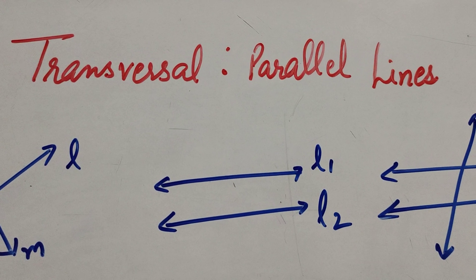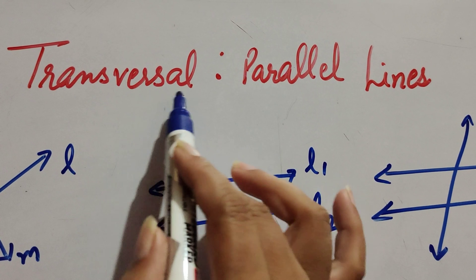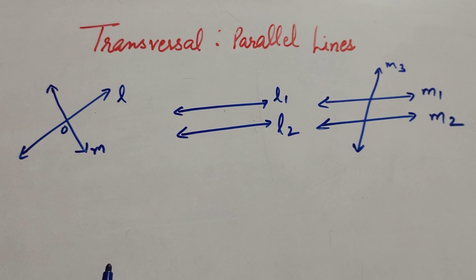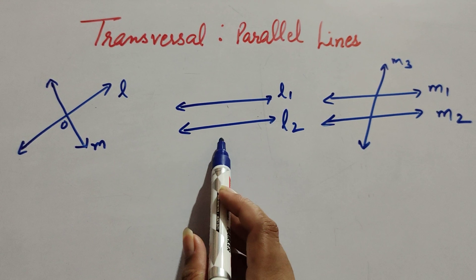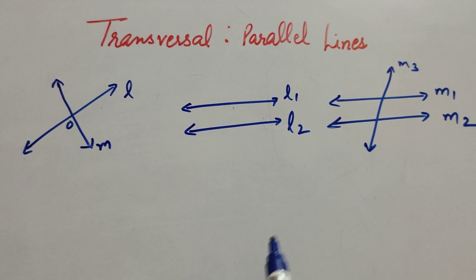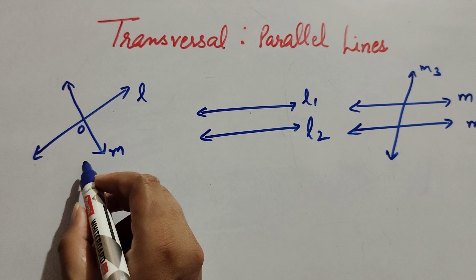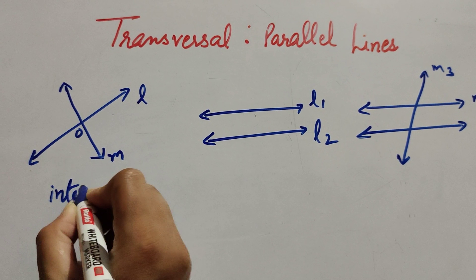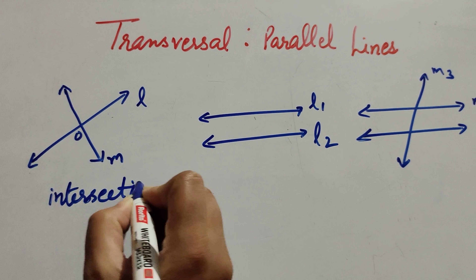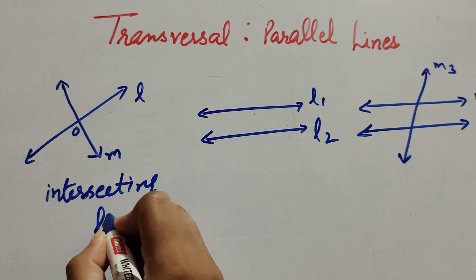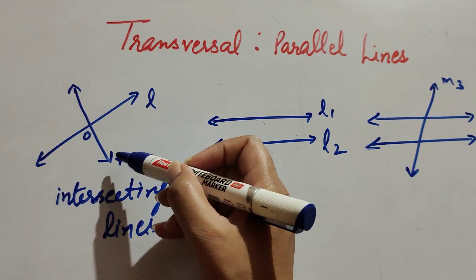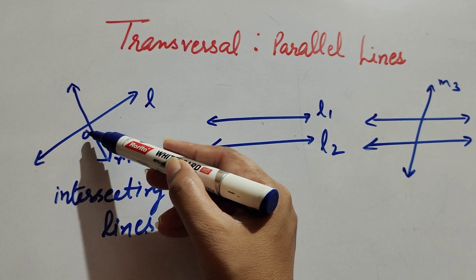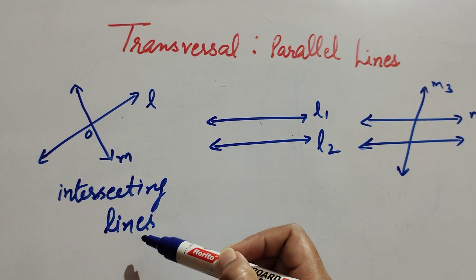Hello friends, welcome to my channel. In this video we discuss transversal lines and parallel lines. You will see three pairs of lines. In the first pair, there are two lines l and m. These are crossed at a point, so these lines are known as intersecting lines. Intersecting lines means two lines cross at a point.